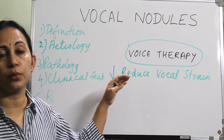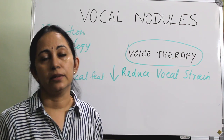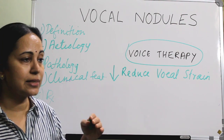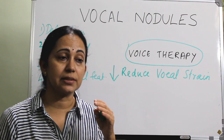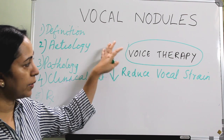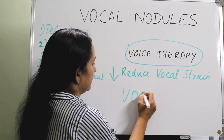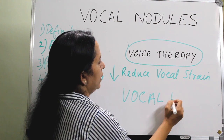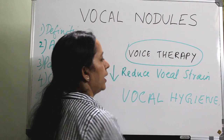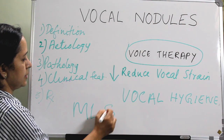If the patient is not improving with voice therapy after more than three months, surgery should be considered. In children, voice therapy is preferred because there is a risk of scarring with early surgery. The mainstay remains voice therapy and good vocal hygiene. If the patient is not improving, we can proceed with microlaryngeal surgery.